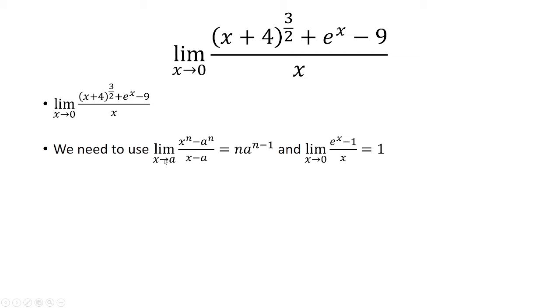First, that the limit as x approaches a of x to the n minus a to the n over x minus a is equal to n times a to the n minus 1. And the limit as x approaches 0 of e to the x minus 1 over x is equal to 1.